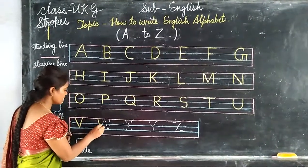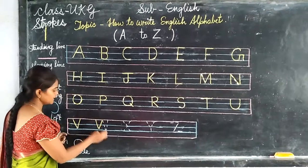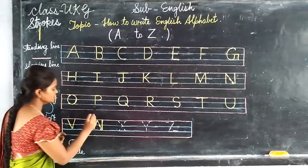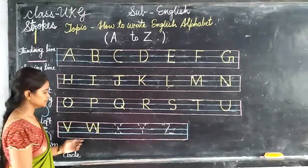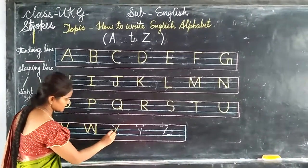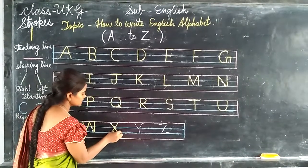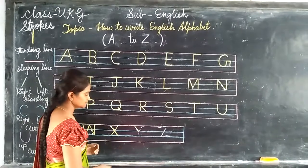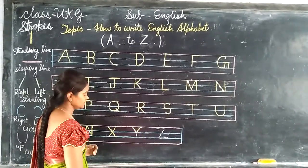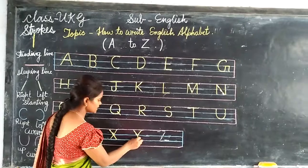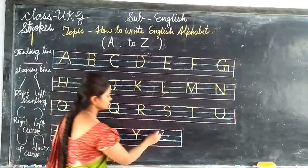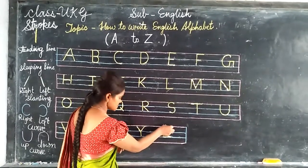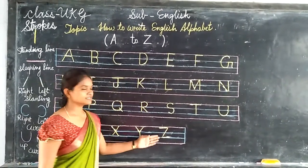Standing line, right slanting line, left slanting line, standing line. W. Right slanting line, left slanting line. X. Left slanting line, right slanting line, and standing line. Y. Slanting line, and another slanting line, right slanting line. Z.